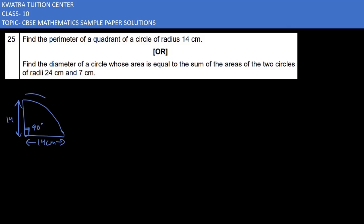Now we also need the arc length. The arc length formula uses theta over 360, and since a quadrant has a 90-degree angle, it will be 90 over 360.